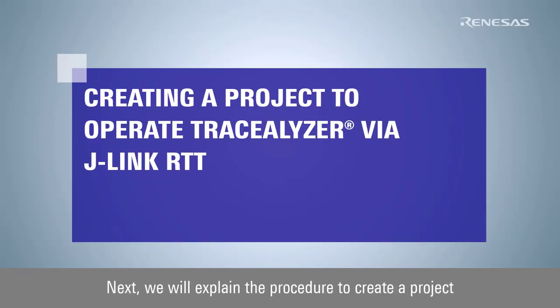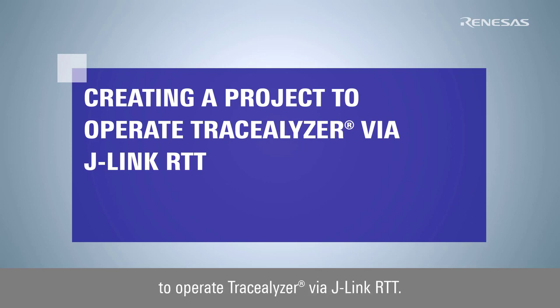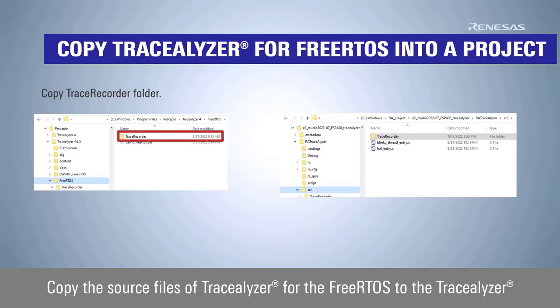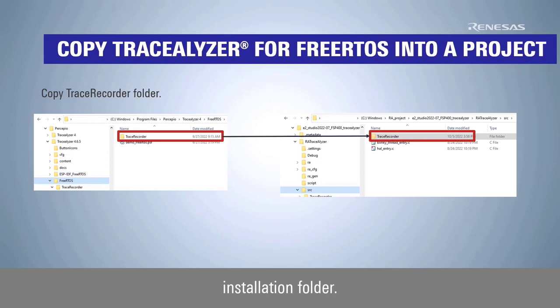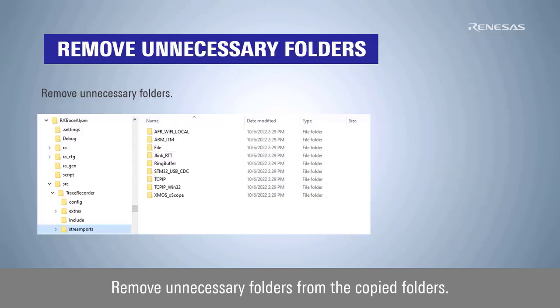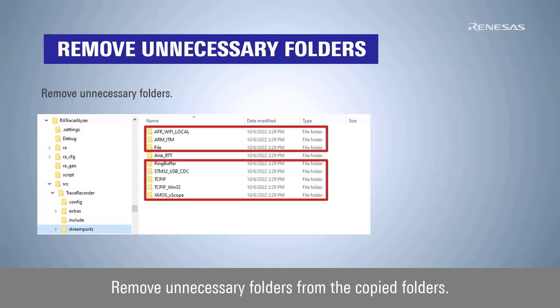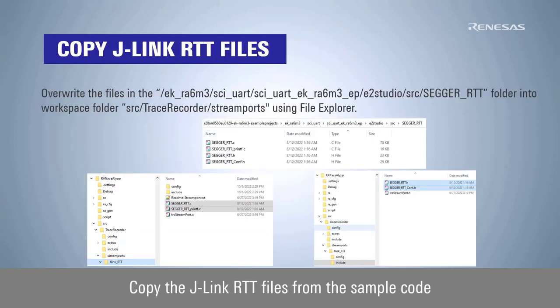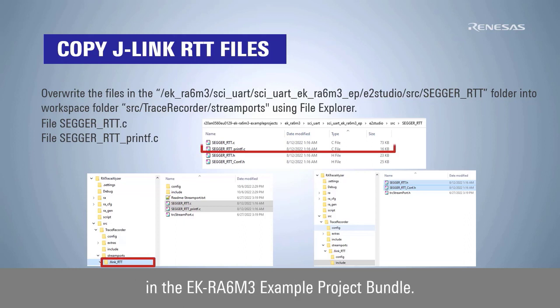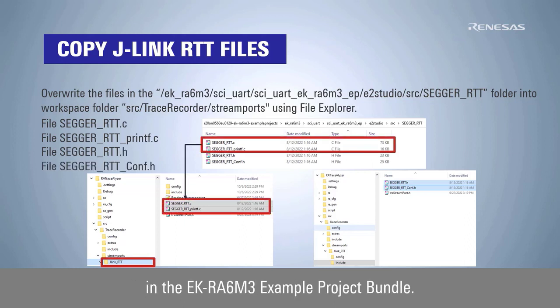Next, we will explain the procedure to create a project to operate TraceElyzer via JLink RTT. Copy the source files of TraceElyzer for FreeRTOS to the TraceElyzer installation folder. Remove unnecessary folders from the copied folders. Copy the JLink RTT files from the sample code in the EKRA6M3 example project bundle.